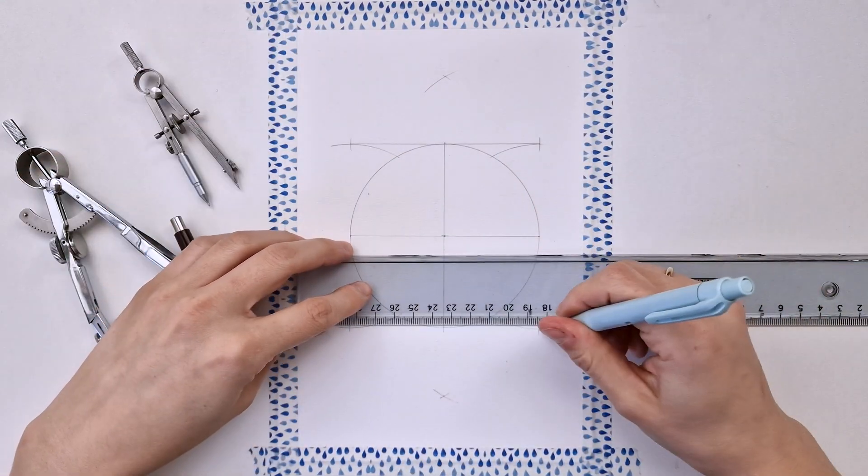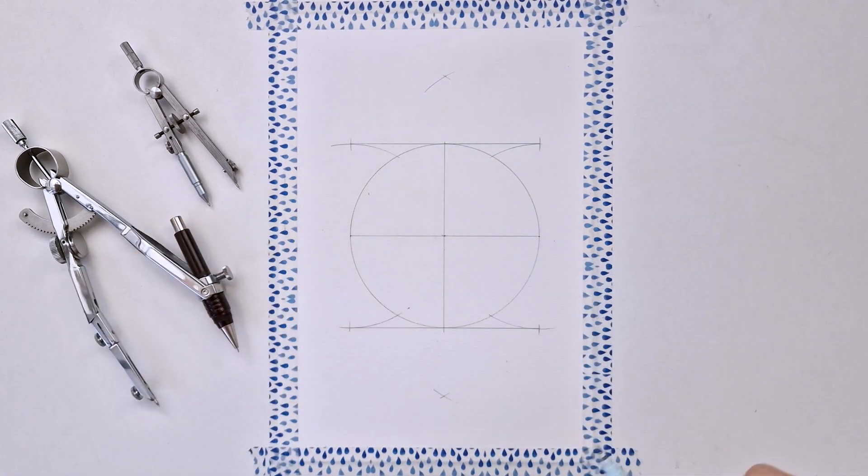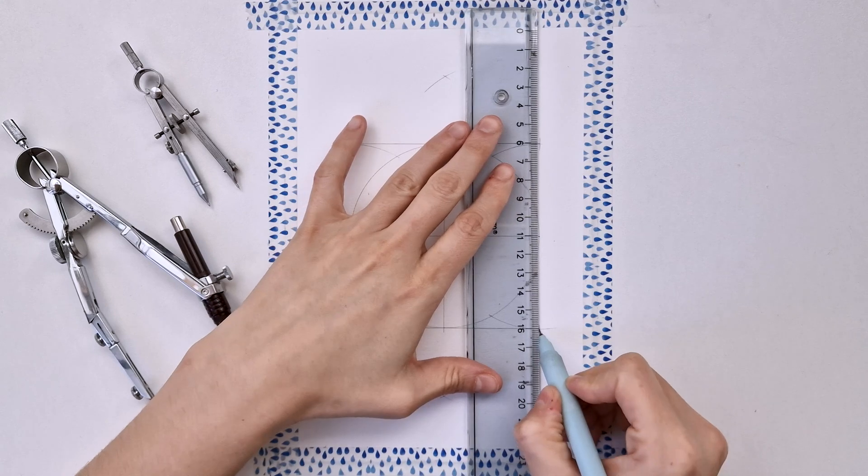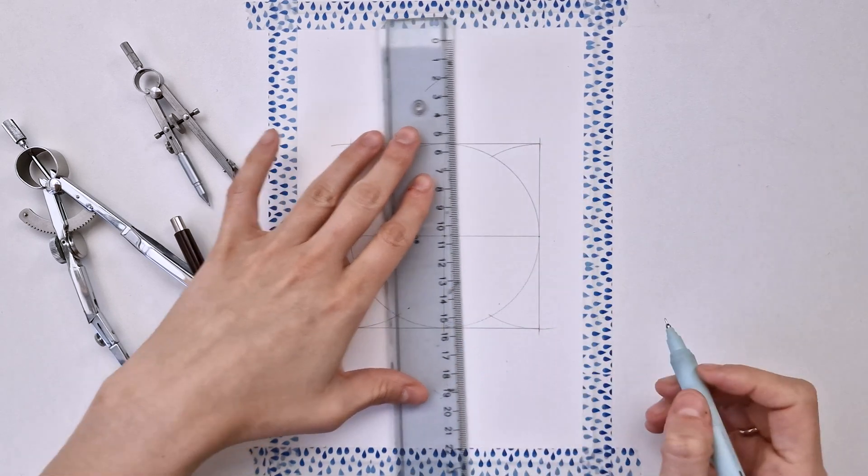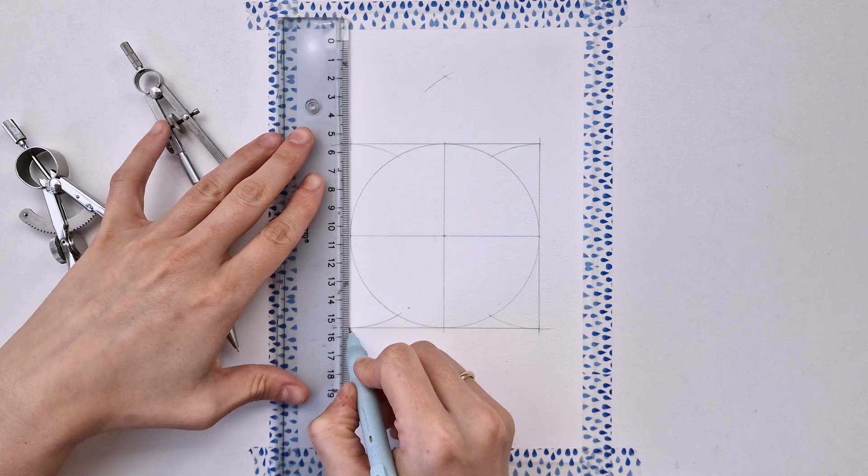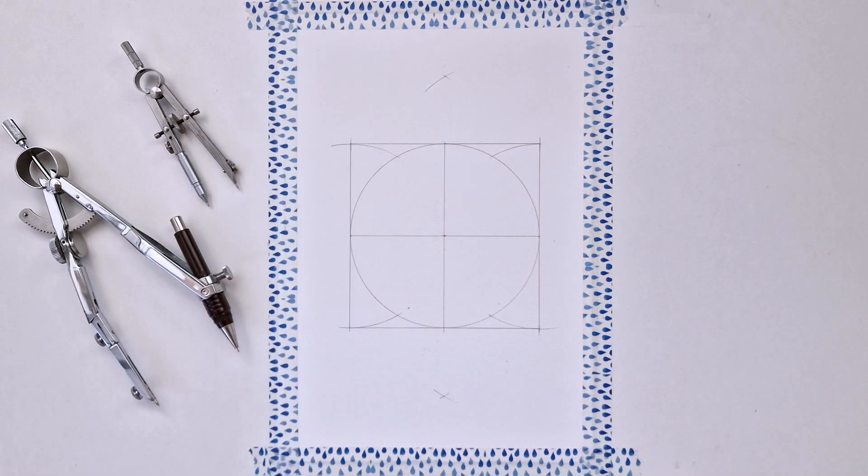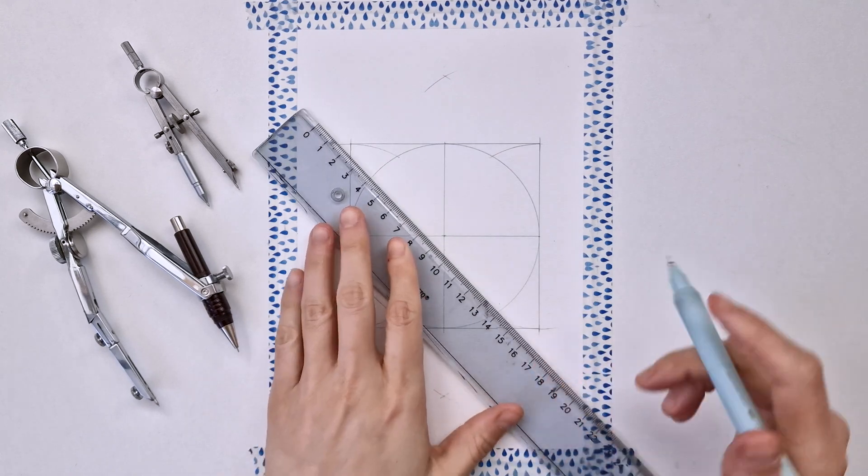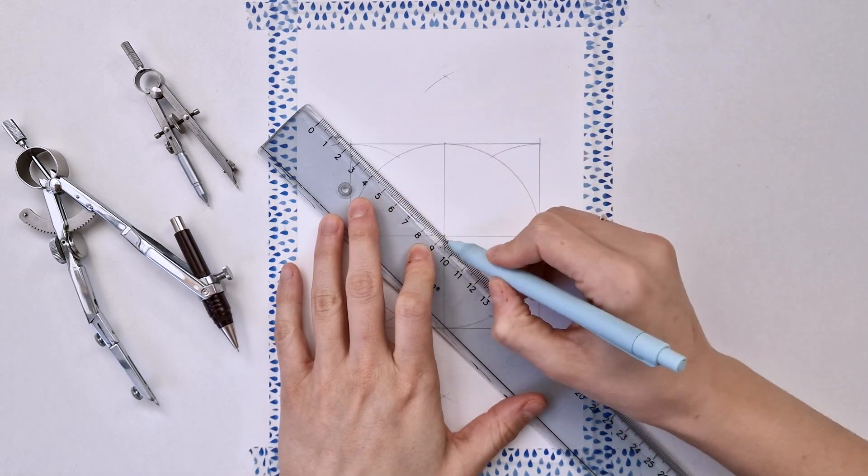Just like this. So now you have four squares and let's add the diagonal lines as well.